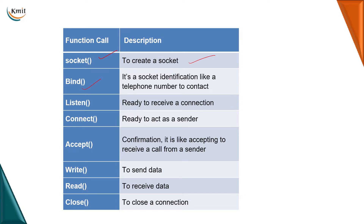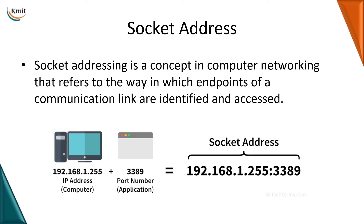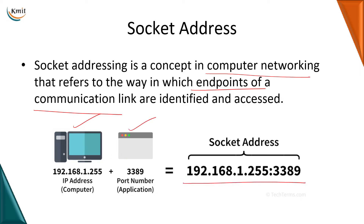To summarize the API functions: socket creates a socket; bind provides an identification number to the socket, just as a telephone number identifies a contact; listen is used by the server to indicate it is ready to receive a connection; connect is sent by the client to connect; accept is a confirmation from the server to the client; write sends the data; read receives the data; and close closes the connection. Socket addressing refers to how end points of a communication link are identified — sockets are identified using the IP address of the computer and the port number of the application, which together form the socket address.